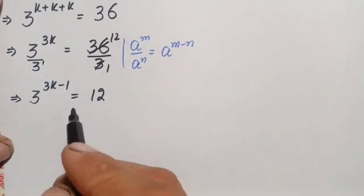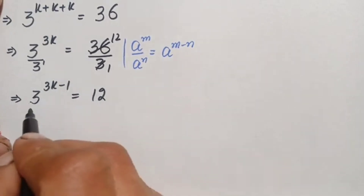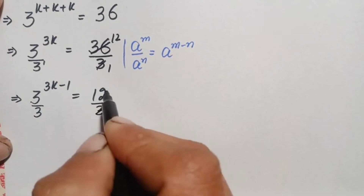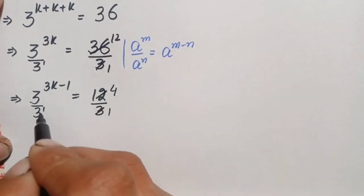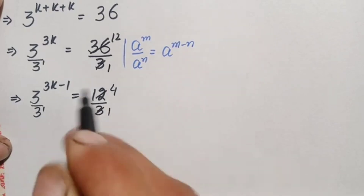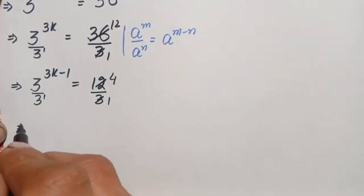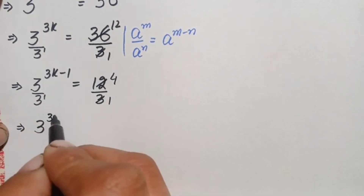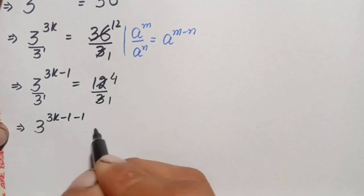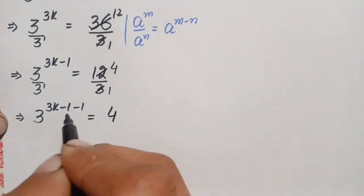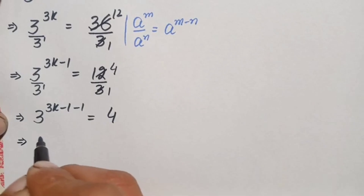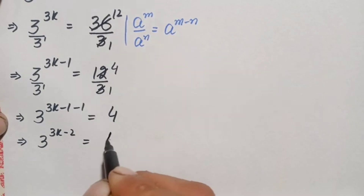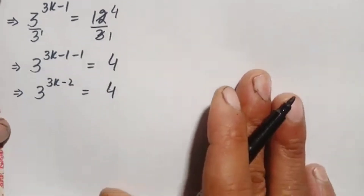Since 3 and 12 are again both divisible by 3, we divide both sides by 3 again. Using the same exponent identity on the left hand side, this gives us 3 raised to power 3k minus 2, which equals 4.